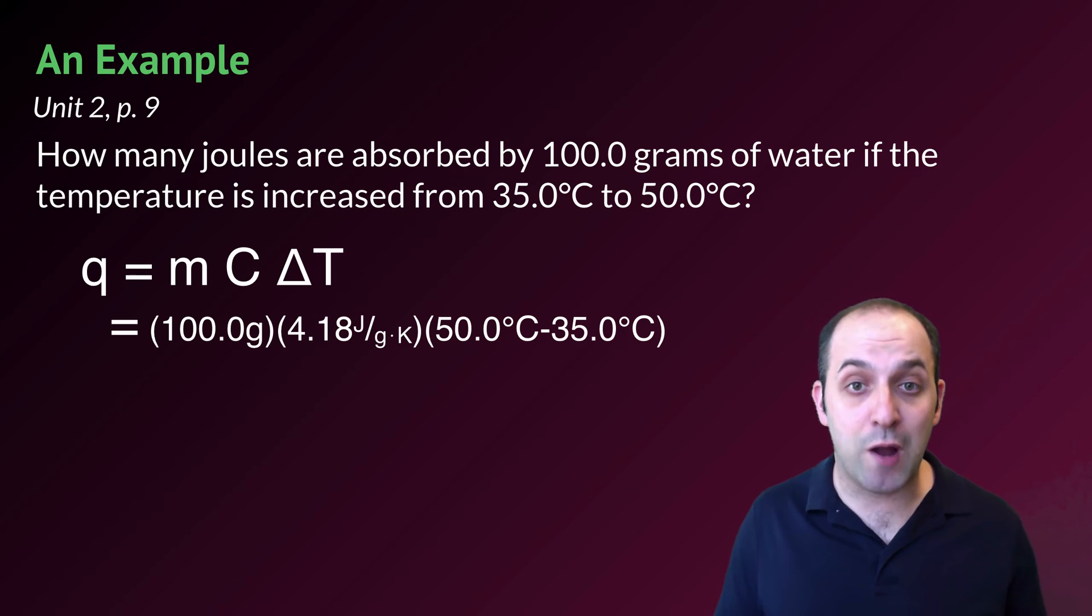The mass is given to us in the problem. It's 100.0 grams of water. The specific heat of water is on reference table B, so we know that it's 4.18 joules per gram degree Kelvin or degrees Celsius. That doesn't matter.